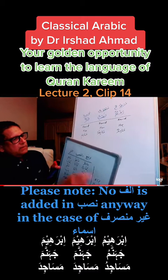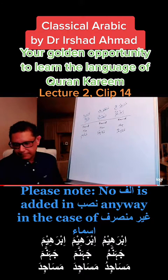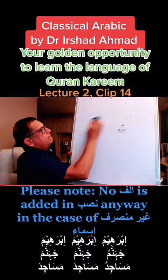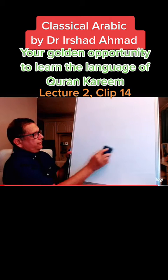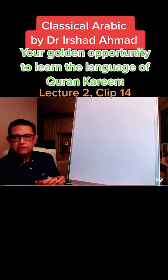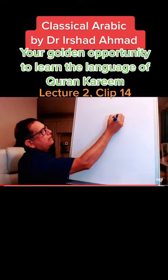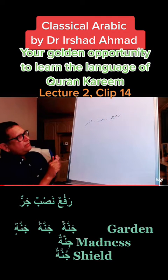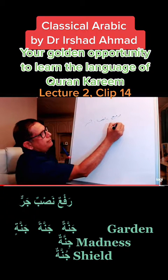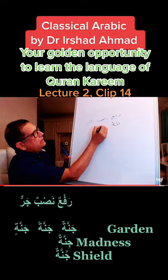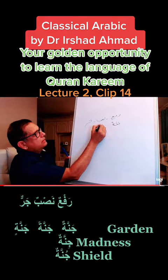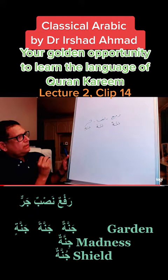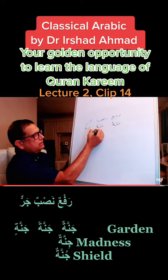I know this lecture has become longer, but just to make the final point and make sure we understand what I'rab is, I'm going to give you another example. From the I'rab point of view, a noun will be in one of three categories: Rafa, Nasab, or Jar. I'm going to write the word 'Jinnatan' — meaning 'garden.' In Rafa it will be Jinnatan, in Nasab Jinnatan, and in Jar Jinnatan. So the change has occurred in the terminal part of the noun — and that's what I'rab is.